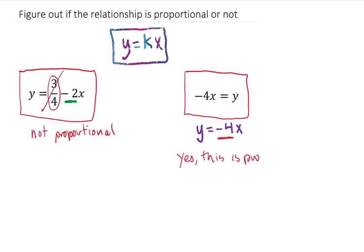And what is our constant? The constant, which is the k, is the slope, which in this case is k equals negative 4. So that's how you determine if a relationship is proportional or not, and if it is proportional, how you determine the constant of proportionality.